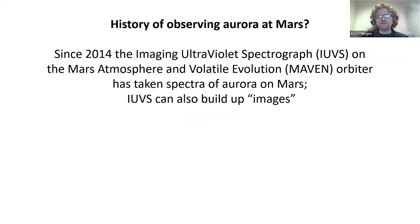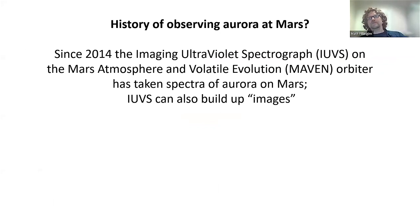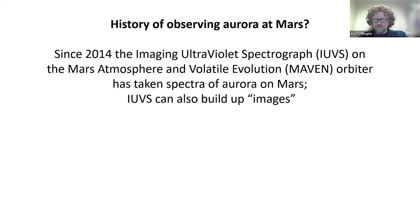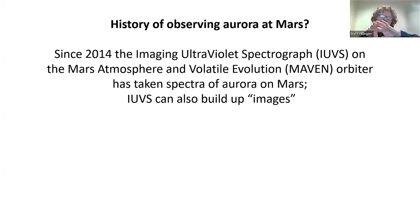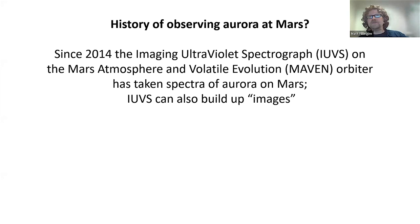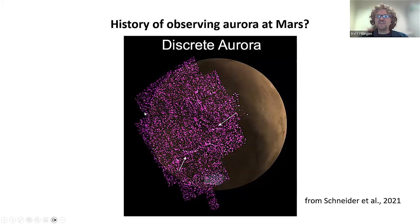Later, about 10 years ago, another mission to Mars called MAVEN had an instrument called the Imaging Ultraviolet Spectrograph, or IUVS — similar to SPICAM, looking at ultraviolet light. But in this case, the instrument itself could move and basically scan across Mars rather than just stare at one spot. IUVS was able to build up images. Here is basically the first image of what Aurora on Mars looks like. The instrument would stare at Mars with a mirror that tilted back and forth to scan, creating these little rectangle strips. You can see little bright squiggles that trace out the places where the magnetic field of Mars is vertical.